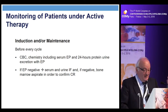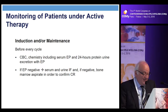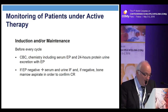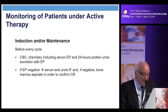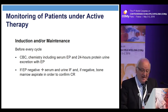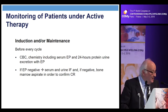Monitoring patients under active therapy: during induction and maintenance, before every cycle, obtain blood cell counts and chemistry including serum and urine studies. If electrophoresis becomes negative, ask for immunofixation. If immunofixation is also negative, perform a bone marrow aspirate to confirm complete remission.